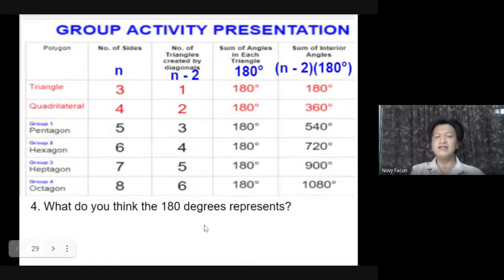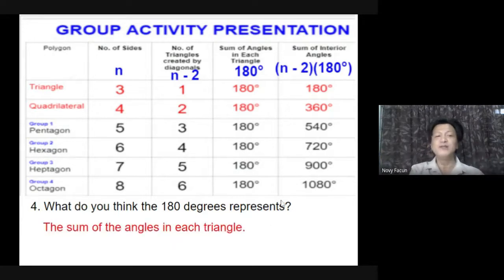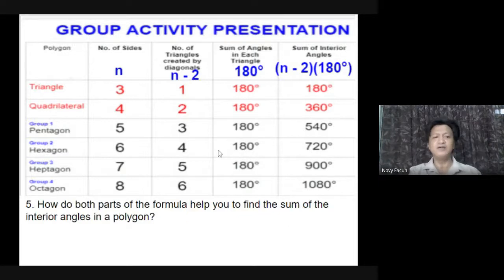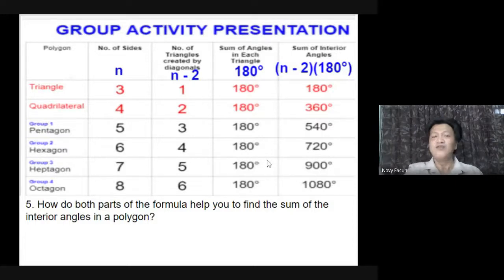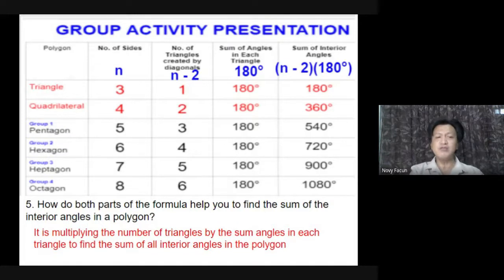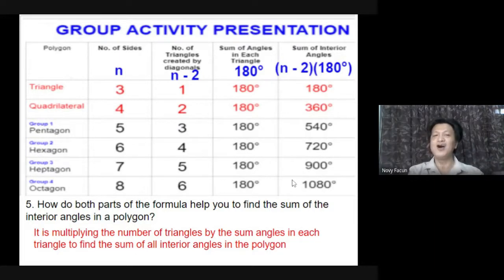Number four: What do the 180 degrees represent? Yes, Sophia — very good answer — the sum of the angles in each triangle. Take note: in any triangle, the sum is always 180. And last question: How do both parts of the formula help you find the sum of the interior angles of a polygon? Yes, Shahina — very good answer — it is multiplying the number of triangles by the sum of angles in each triangle to find the sum of all interior angles in the polygon. Give a clap to all of you — you discovered the formula.